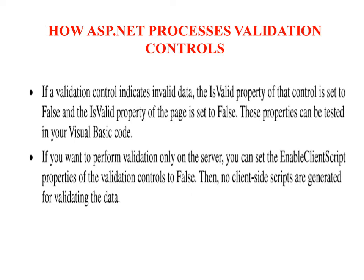In the previous lecture I discussed the validation controls and their properties. The common validator properties are: Control to Validate, Display, Error Message, Text, Enabled, Enable Client Script, Validation Group, and Is Valid.